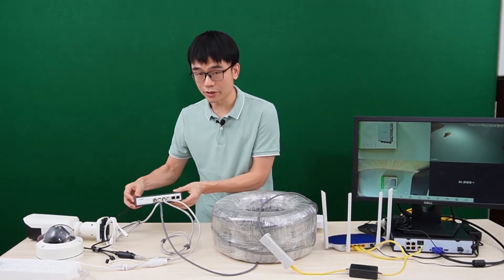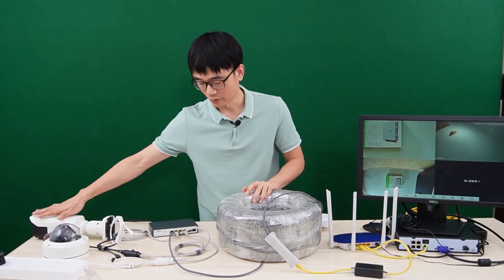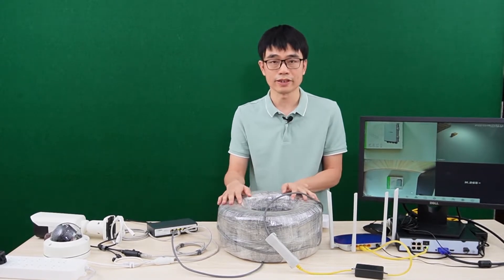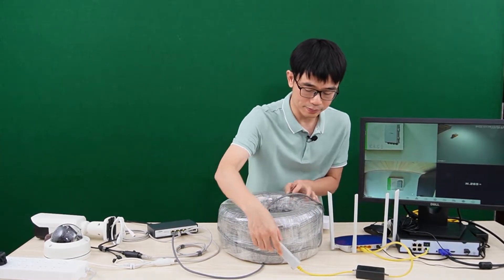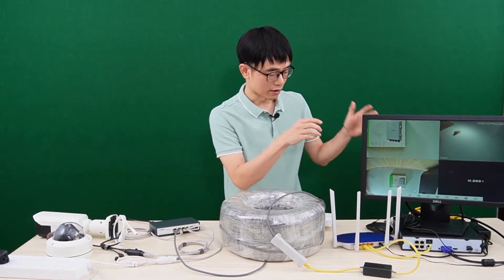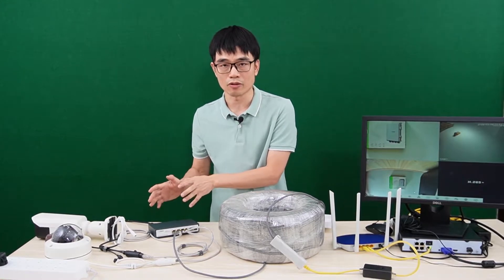This is the setup from last video. We have a long-run PoE switch, and this switch supplies power for these three cameras. We use one of the long-run PoE ports, PoE number 1, to link this 1,000 feet Ethernet cable to this PoE splitter. We need this PoE splitter because it helps the network video recorder talk to the switch. Even though the switch can supply long-run, the network video recorder is just a regular recorder.